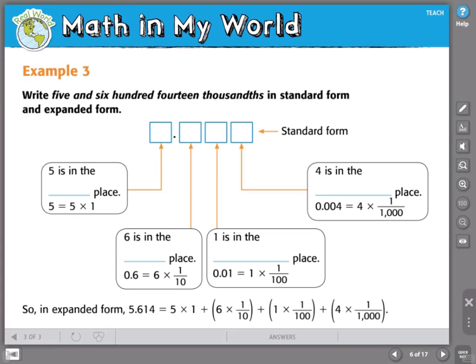One more example before I set you loose. We're going to learn about expanded form. We're going to take this word form of a decimal, five and six hundred fourteen thousandths, and we're going to write it in standard form and expanded form. So we're going to take this word form and we're going to break it apart into the things that we know. I know that AND is my decimal point.